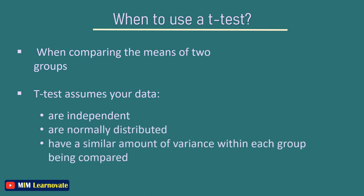If your data do not fit these assumptions, you can try a non-parametric alternative to the T-test such as the Wilcoxon signed rank test for data with unequal variances.